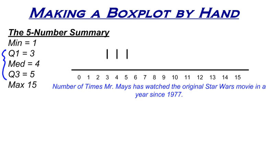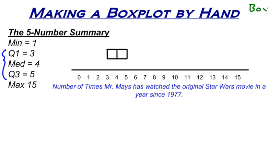So I've placed vertical dashes above the first quartile, median, and third quartile. The next thing we do is turn that into a box — this is called a box plot. I close up the box, and there it is. Now sometimes this is also called a box and whisker plot, because with the minimum and maximum values, you're going to use those to create whiskers.